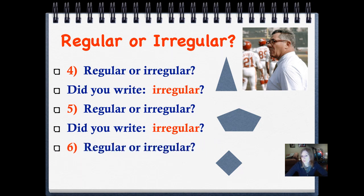Number six, regular or irregular? Push play when you're ready. Did you write regular? That's a rhombus. It's a square turned on its side in this case, and it's also a rhombus. So as we're looking at it, if we measure it with our pencil, all the sides are the same. Good job. Let's keep going.